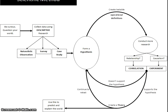One of the first things that a psychologist must do is be curious. We have to question the world that we live in, and in being curious we can think of something we would like to study. In doing that, we can collect data using descriptive research, which is what today's lecture is going to be on. There are three ways to collect this data: through a naturalistic observation, a survey, or a case study. Descriptive research is completely different than experimentation, and we're going to get into the difference between a correlational study versus an experiment — it is very important that you know the difference.